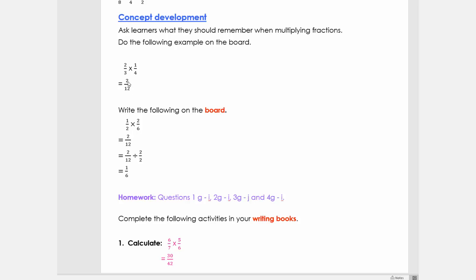So we can say what can go into 12 that can also go into two. Now here we can say it's two. So if we divide two by two, it's one and 12 by two, it is six. So this answer in a simplified form is then one six.